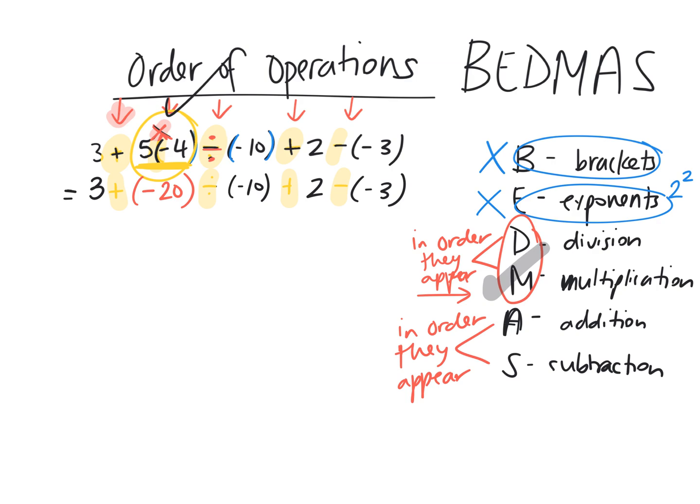Do I have any more multiplication? No, I have addition, division, addition, and subtraction. So what's the next step? Adding, subtracting, or dividing? Divide. Good. Because we have to do this first. So we are going to divide this, right? Negative 20 divided by negative 10. So I'm going to rewrite this again. 3 plus, and now I have to simplify this. What is negative divided by a negative? Positive. What's 20 divided by 10? 2.